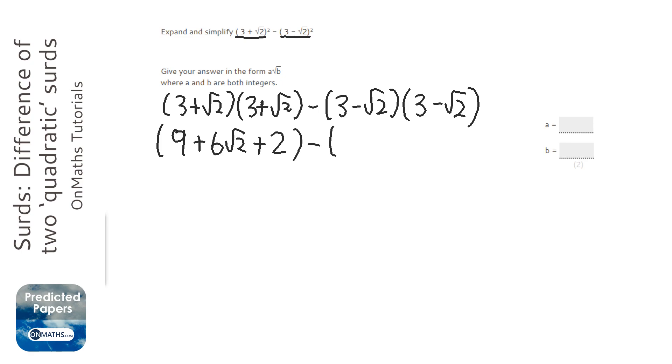So the second one, 3 times 3 is 9. And we've got minus 3 root 2 minus 3 root 2, which is minus 6 root 2. And then we've got minus root 2 times minus root 2. 2 minuses make a plus. And root 2 times root 2 is root 2.